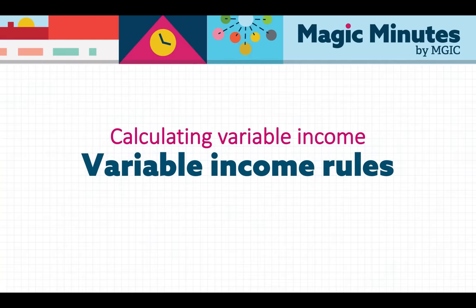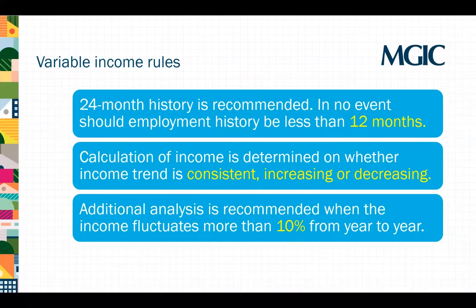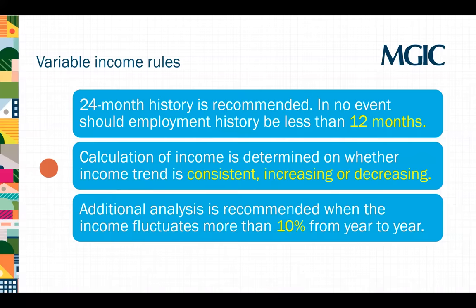In this session, we'll go over how variable income is different than fixed income in that it is not received at a predetermined amount or at a regular time, and therefore must be considered based on the history of receipt and the trending of income received. Here are the variable income rules: a 24-month history is recommended, and in no event should employment history be less than 12 months. Calculation of income is determined on whether income trend is consistent, increasing, or decreasing. Additional analysis is recommended when the income fluctuates more than 10% from year to year.